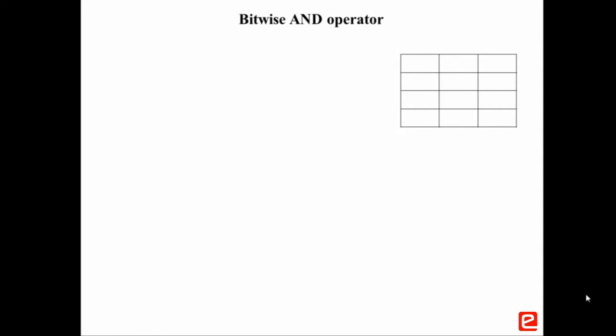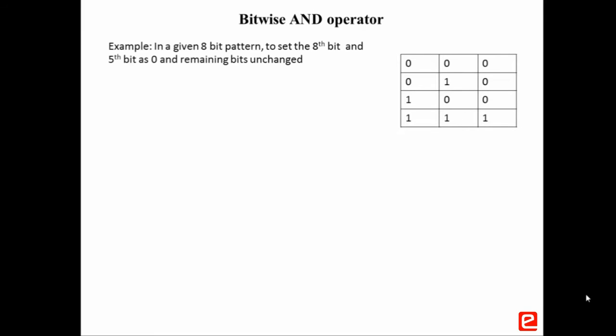First is the bitwise AND operator. ANDing a bit with 0 will give the output as 0 — that is, ANDing 0 with 0 or 1 gives 0. But ANDing the bit with 1 will give the bit as it is at the output — that means ANDing 1 with 0 gives 0, and ANDing 1 with 1 gives 1. Hence, the AND operator is used for setting the desired bits to 0 in a given data. Consider an example: in a given 8-bit pattern, set the 8th bit and 5th bit as 0, while other bits should remain unchanged.